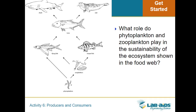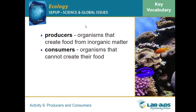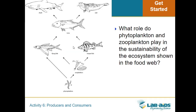Zooplankton are right above phytoplankton, so they're also dependent on phytoplankton. We introduced the terms producers and consumers. Producers are organisms that can create food from inorganic matter — they can take sunlight, carbon dioxide, and water and turn that into chemical energy. Consumers are organisms that can't create their own food; they depend on others. So phytoplankton at the bottom must be producers, zooplankton consume phytoplankton and other zooplankton, and as you move up, all organisms are consumers of the level below them.